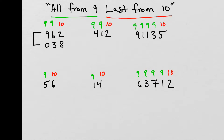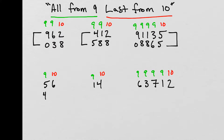Next example: 9 minus 4 gives us 5, 9 minus 1 is 8, and 10 minus 2 is 8. These two numbers are complements of each other. Third problem: 9 minus 9 is 0, 9 minus 1 is 8, 9 minus 1 is 8, 9 minus 3 is 6, and 10 minus 5 is 5. Problem number 4: 9 minus 5 gives us 4, and 10 minus 6 gives us 4. These two numbers are complements.